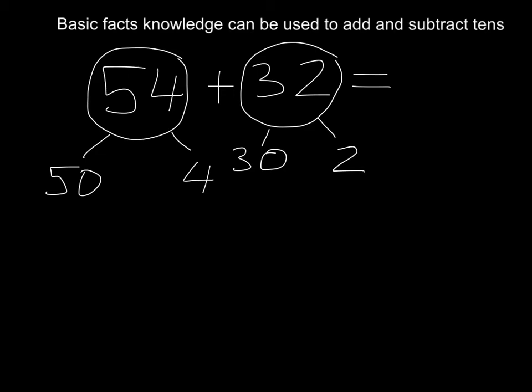Then what we need to do is add our tens. So 50 plus 30. Remember we can do 5 lots of 10 and 3 lots of 10. I know that 5 plus 3 equals 8, so 50 plus 30 will give me 80.